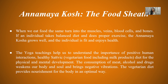When we eat food, it turns into muscles, veins, blood cells, and bones. If an individual takes a balanced diet and does proper exercise, the Annamaya Kosh develops. Yoga teachings help us understand the importance of positive human interactions, healthy sattvic vegetarian food including milk products, for physical and mental development. If you consume meat, alcohol, and drugs, it will weaken your body and generate negative vibes. A vegetarian diet provides nourishment for the body optimally.